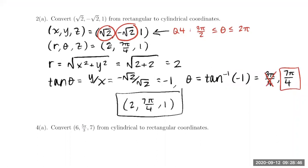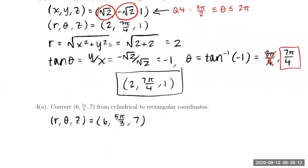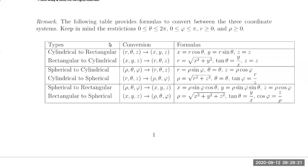For this next problem, we are given a point in cylindrical coordinates and we want to go back to rectangular coordinates. Since the point given is in cylindrical, I identify the variables we know: r, theta, and z. Again, z is z, so there's nothing we need to do with that last coordinate. We are seeking x, y, and z. Now we're going from cylindrical to rectangular — I want to find x and y. There's no ambiguity going in this direction; we're just computing r cosine theta and r sine theta.